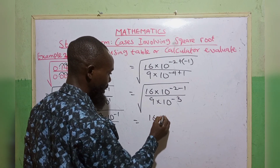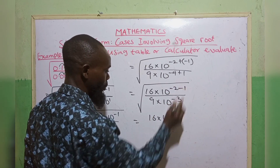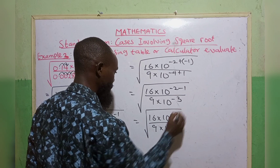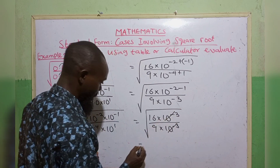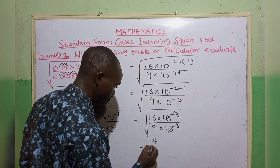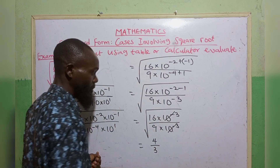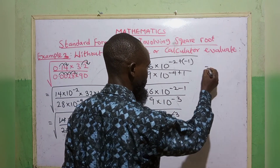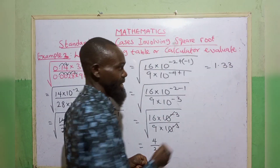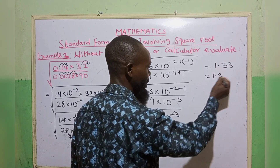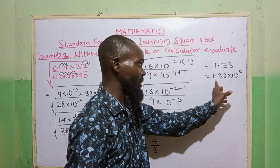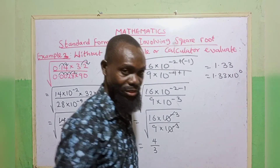Now, the square root of 16 is 4 and the square root of 9 is 3. So we have 4 divided by 3, which gives 1.33 and so on. To put this in standard form, it is 1.33 times 10 raised to the power of 0. Since 10 raised to the power of 0 is 1, multiplying by 1 gives us 1.33.